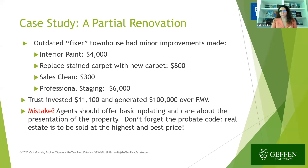Case study — a partial renovation. It was an outdated fixer townhouse with limited funds in the trust. We utilized vendors paid through escrow. Interior paint cost $4,000; replaced stained carpet with new carpet for $800; a sales clean for $300; and professional staging for $6,000. The result: we generated $100,000 over fair market value. Agents should offer basic updating and care about the presentation of the property. Don't forget the probate code — real estate is to be sold at the highest and best price.